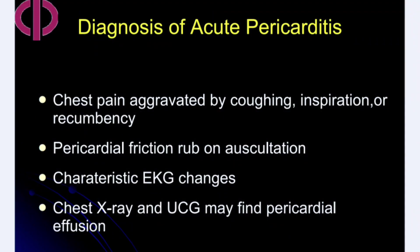Diagnosis of acute pericarditis is based on: chest pain aggravated by coughing, inspiration, or recumbency; pericardial friction rub on auscultation; classic ECG changes; chest X-ray findings; and pericardial fluid analysis.